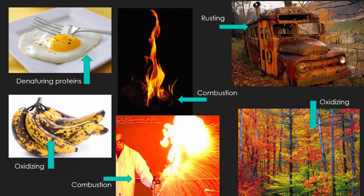So denaturing of proteins, like when you cook a raw egg. Oxidation, or oxidizing, which is another way of saying rusting, tarnishing, or rotting.